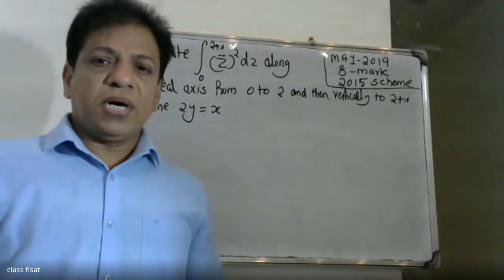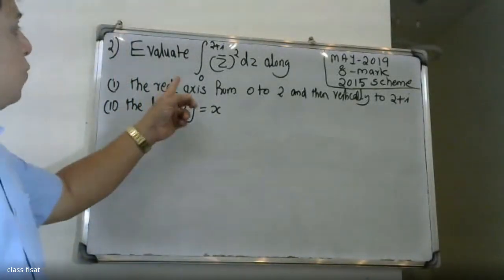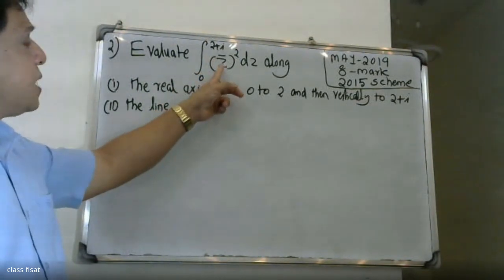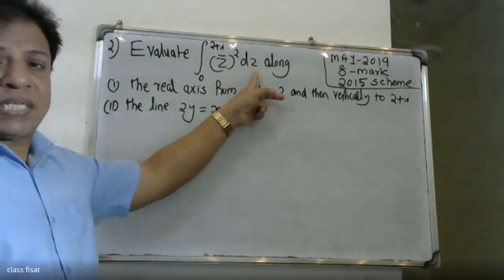Good morning, students. This is an Adithak university question. Evaluate, in general, the integral from 0 to 2 plus i, this is the path over the square — dz.